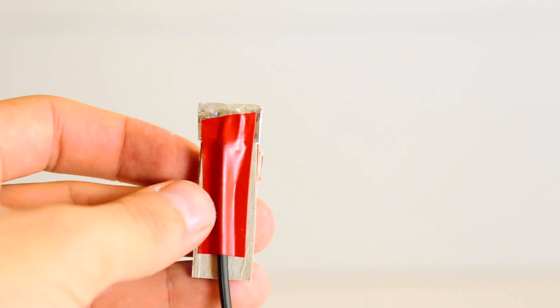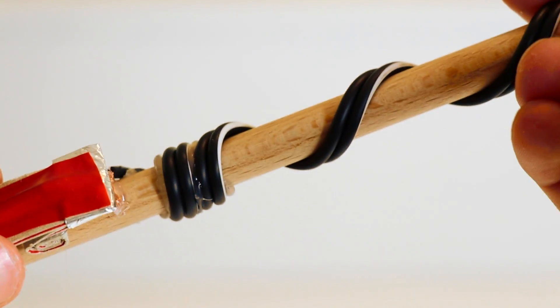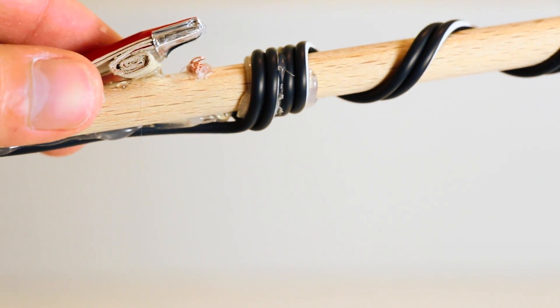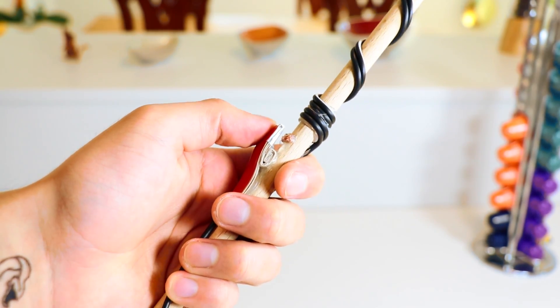Now take the whole assembly and secure it to the wooden dowel using a generous amount of hot glue. Make sure the aluminum bit hangs right over the exposed copper wire. This will be our trigger mechanism.